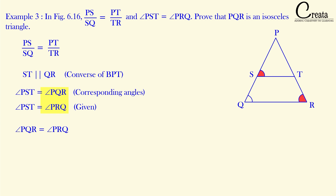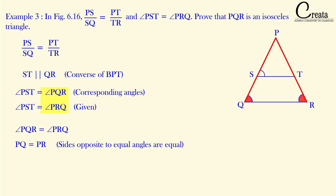These two angles, angle PQR and angle PRQ, are equal. The sides opposite to equal angles are also equal, so the sides opposite to these angles — PQ and PR — are also equal to each other. Since two sides of triangle PQR are equal, this triangle is an isosceles triangle, which is what we had to prove. That is the answer to this question.